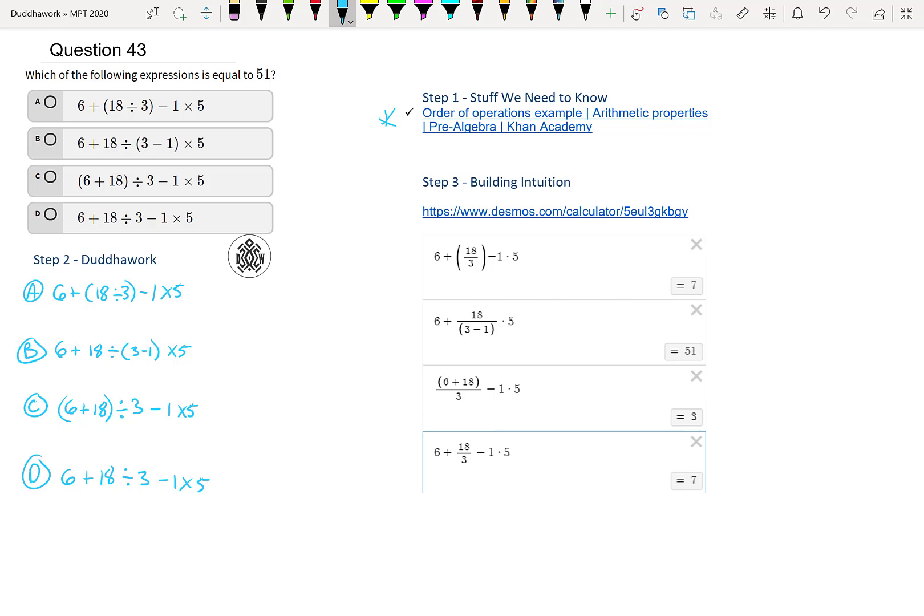And here the theory is simply BEDMAS. And notice that the way I write it, I put the D and the M on the same level. So that means this is division and multiplications, and then this is addition and subtraction. This is exponent, and then this is brackets.